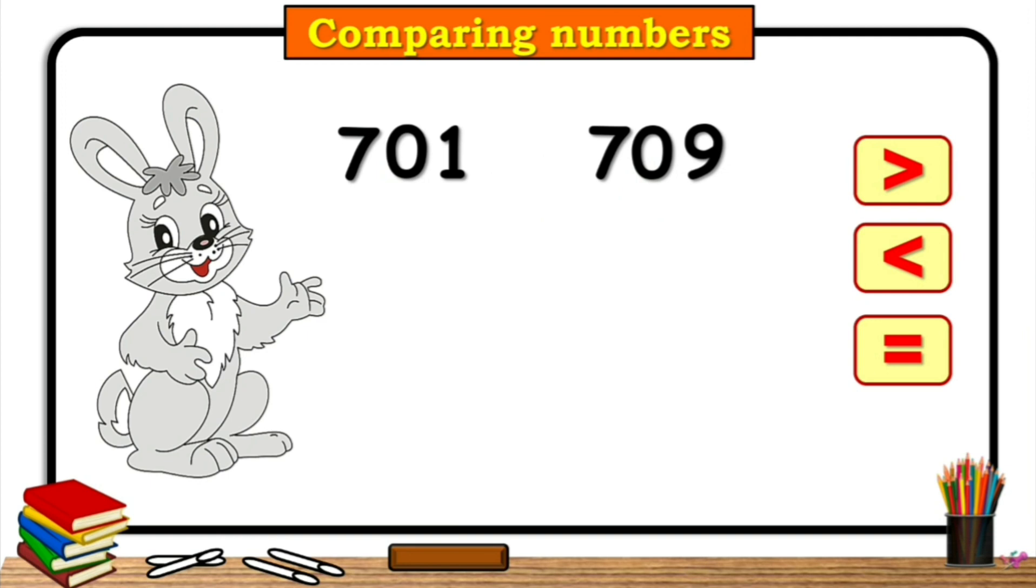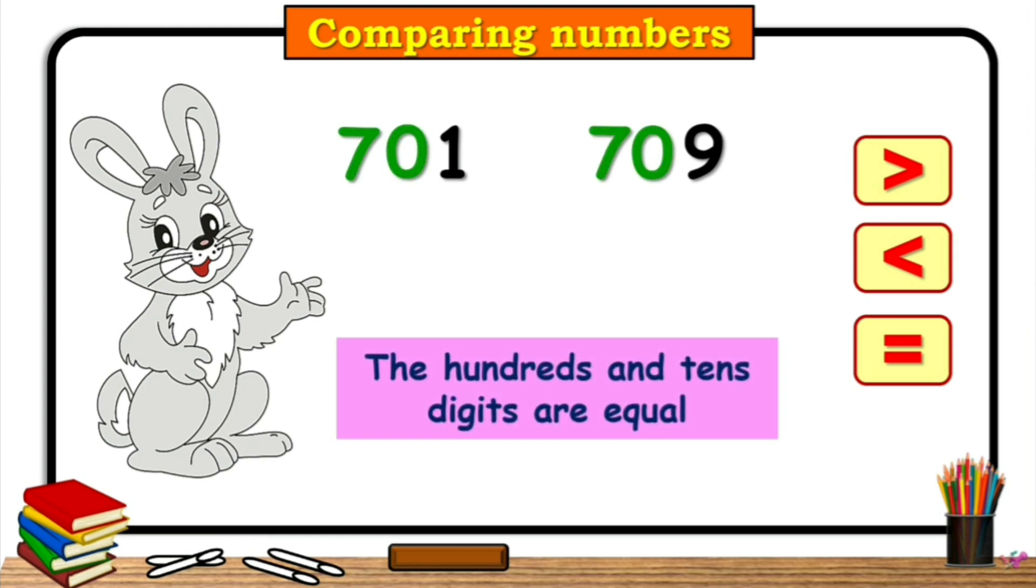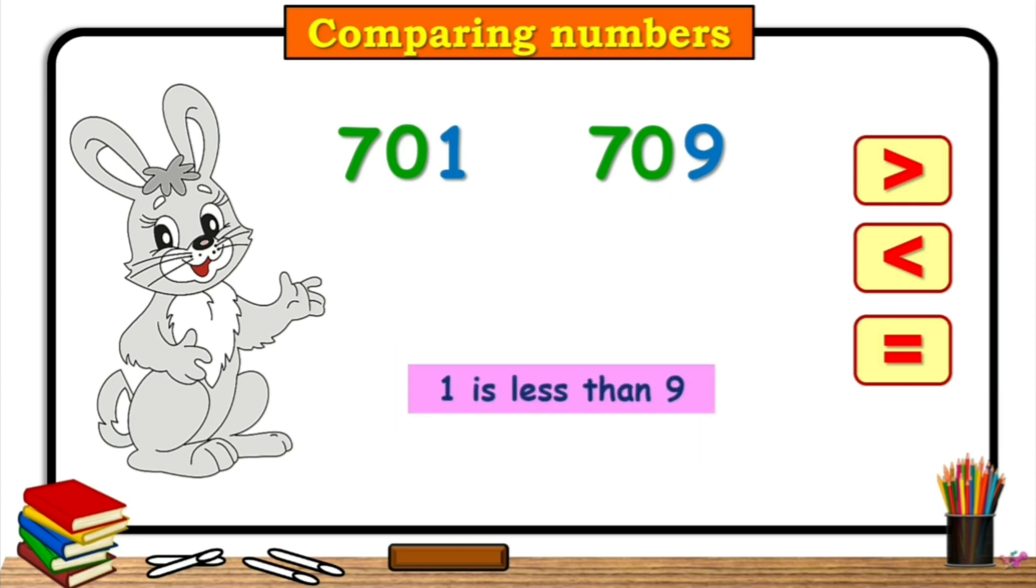701 and 709. The digits are equal in both the hundreds and tens place. So, we will look at the ones place. So, here 1 is less than 9. That means, 701 is less than 709.